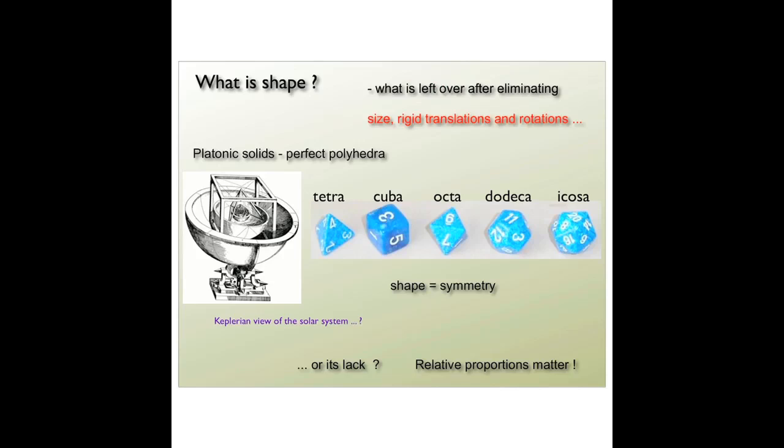A mathematician would define shape as something which is left over after you've done everything that I've indicated in red over here. What is shape? Shape is what is left over after eliminating size and after eliminating motions which essentially preserve the object up to translating and rotating it.